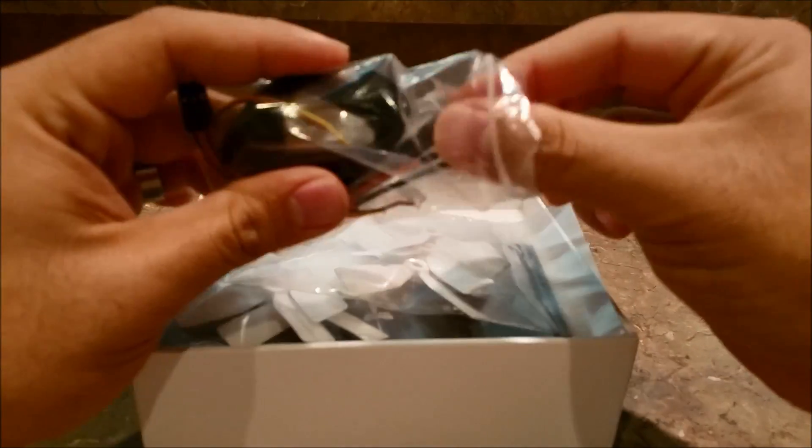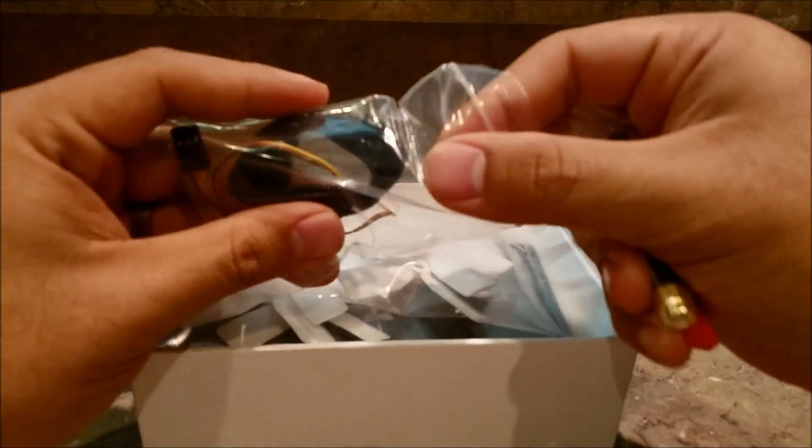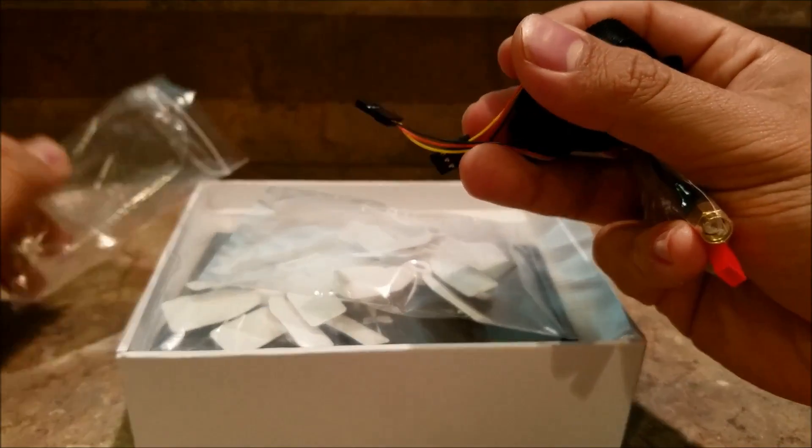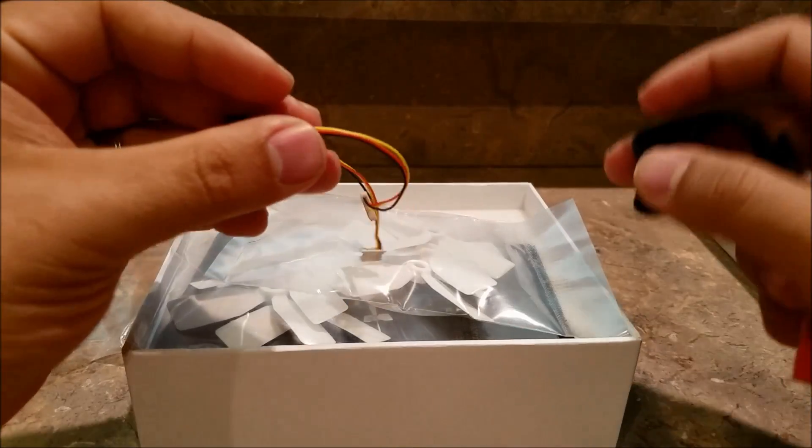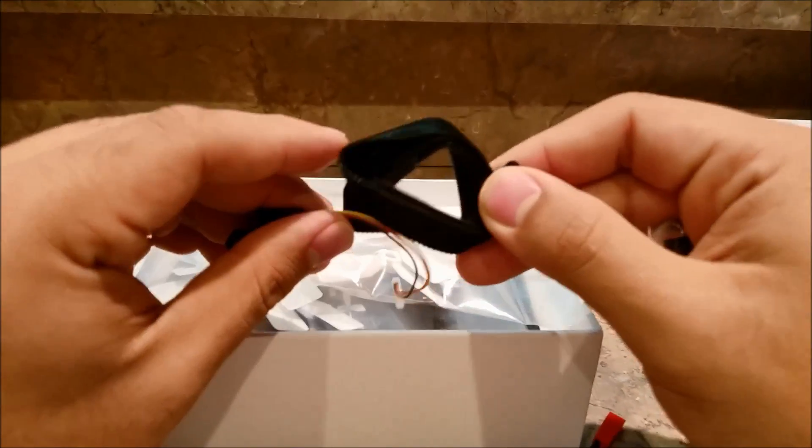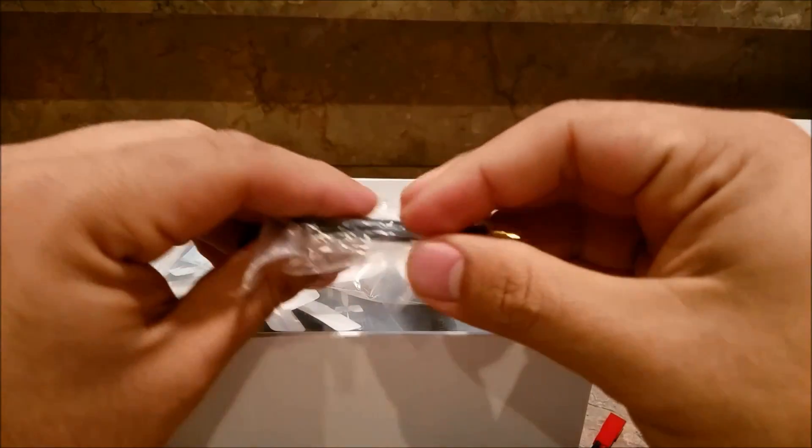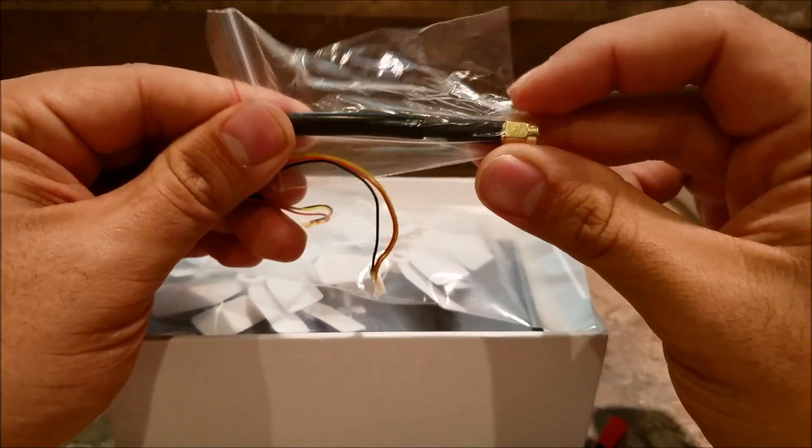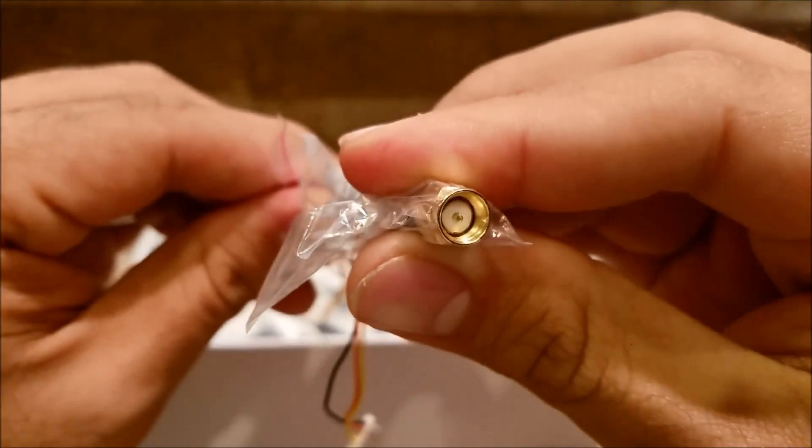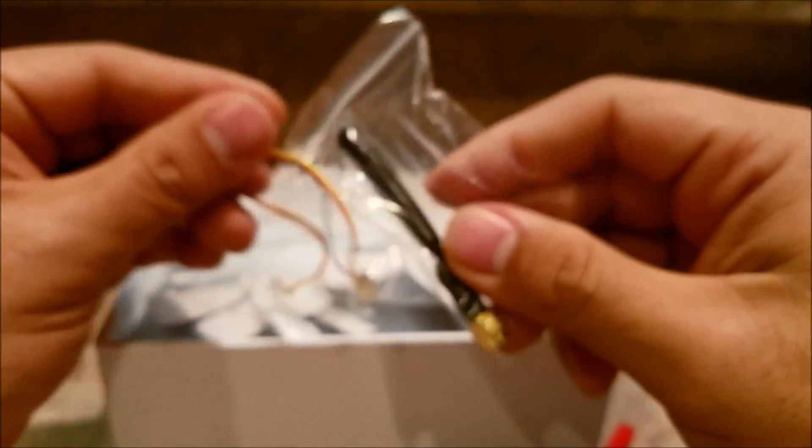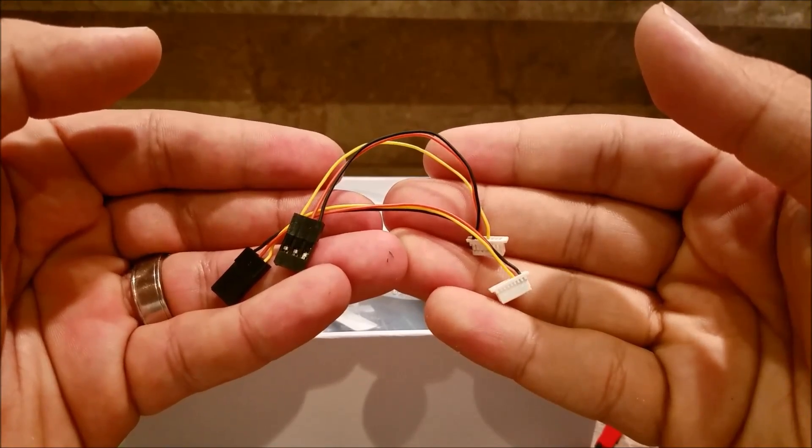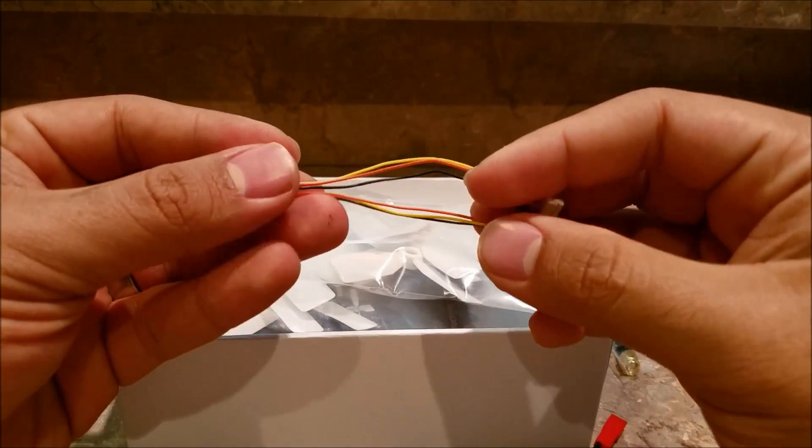This is really nice - it is receiver ready. This isn't bind and fly, not a ready-to-fly package. This is receiver ready PNP so you're going to be able to add your own receiver for your transmitter, which is nice and gives you flexibility. You will need to have some knowledge on that. Looks like we get a battery strap here and a tiny dipole antenna which is pretty unique. That is a male antenna.